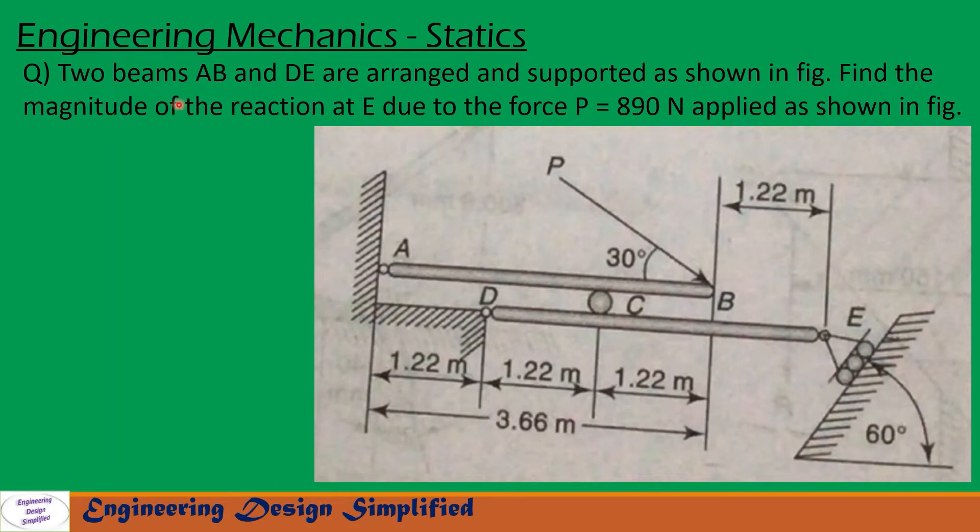Today's problem is: two beams AB and DE are arranged and supported as shown in figure. Find the magnitude of the reaction at E due to the force P equal to 890 Newton applied as shown in figure.